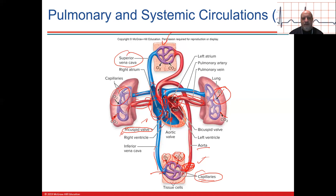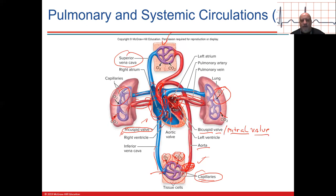Oxygen goes into the capillaries and then into the pulmonary veins, which drain blood into the left atrium. There's a valve between the left atrium and the left ventricle called the bicuspid valve — the left atrioventricular valve — also known as the mitral valve because it looks like a bishop's mitre. The blood in the left ventricle is then pumped into the aorta, which branches to the head, arms, upper trunk, and descends to all parts of the body — all the way down to the toes.